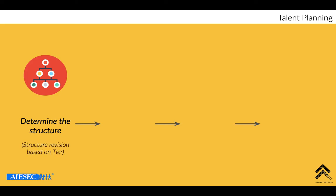What can you refer to? Definitely the structure revision based on tier, and also your growth strategy. If you have any doubts about what kind of strategies are going to be implemented in each function, I also compile growth strategies in the talent planning tool itself. Anything you want regarding resources from MC — these are the things we can provide to you.